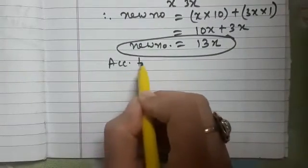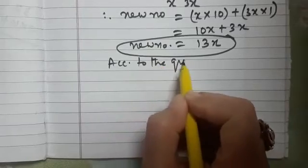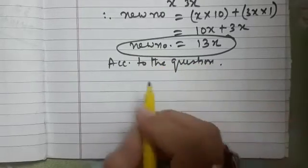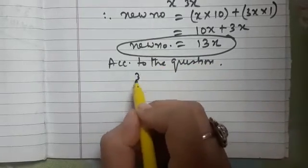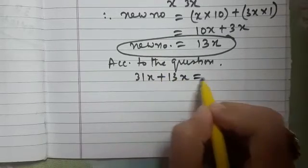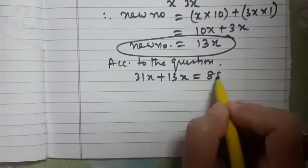So according to the question, 31x plus 13x is equal to 88.